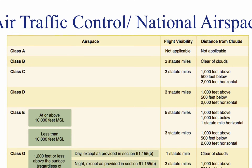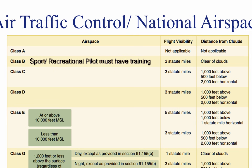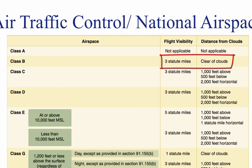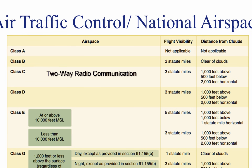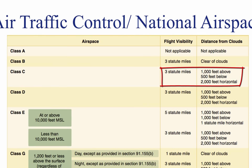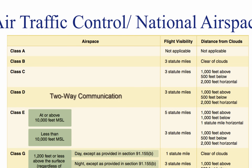Aircraft operating within Class B airspace must have a transponder and altitude reporting equipment, and no pilot may operate in Class B airspace unless given permission by ATC. A sport or recreational pilot must have proper training before entering. The weather minimums for VFR flight in Class B are three statute miles visibility and clear of clouds. Class C airspace requires two-way communication with ATC and appropriate transponder equipment. Weather minimums are three statute miles visibility, 1,000 feet above clouds, 500 feet below clouds, and 2,000 feet horizontally from clouds. Class D weather minimums are the same as Class C.